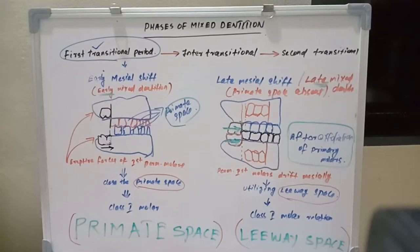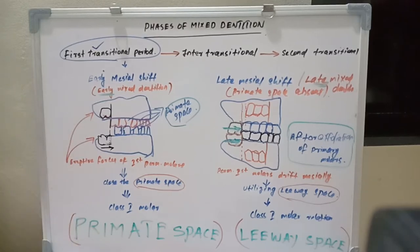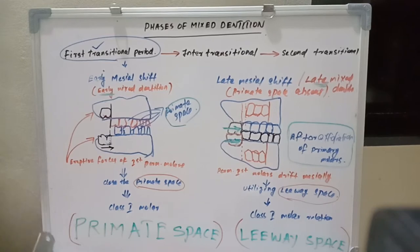Hello everyone, welcome back to a new session on dentistry and more. Let's continue our periodontic sessions. Last session I was talking about the first transitional period and the changes happening in the oral cavity during this period — the exchange of primary incisors by permanent incisors and the eruption of permanent first molars. With the eruption of permanent first molars, there are a lot of occlusal changes happening, from flush terminal plane to mesial step to distal step.